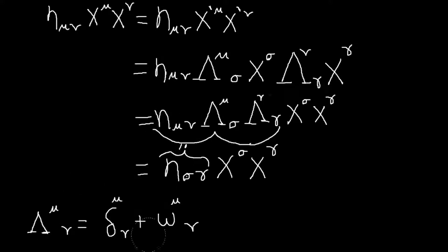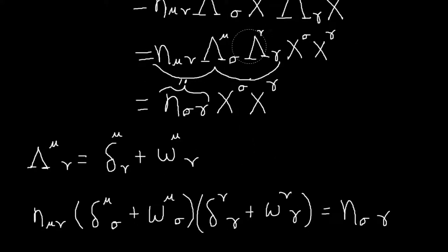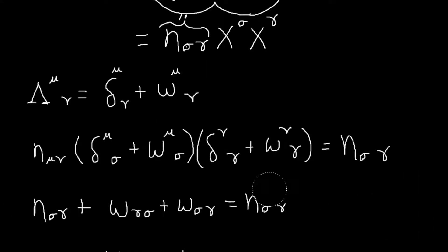So if we do write it like this, then we still want this condition to be satisfied. So we can just plug our infinitesimal expression for the Lorentz transformation in here. And we will get this equation. And I can foil this all out. So the first term, I'll just have two delta functions, and they will just change these mu and nu to sigma and gamma. And then the cross terms...